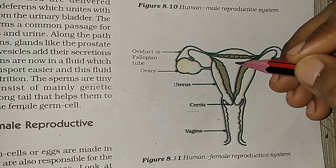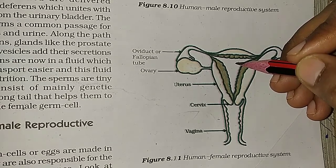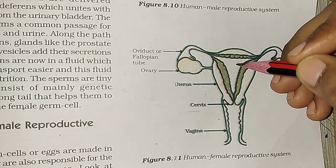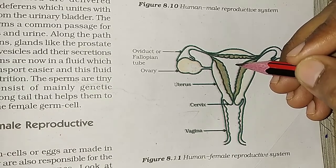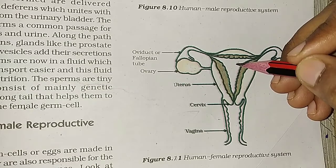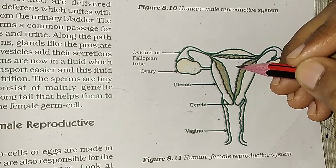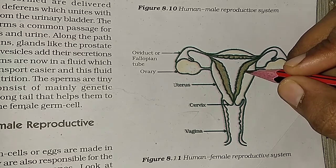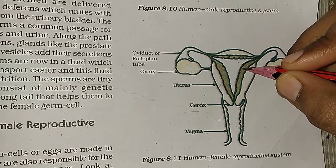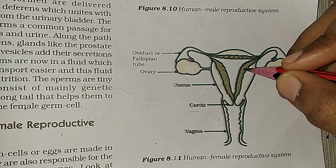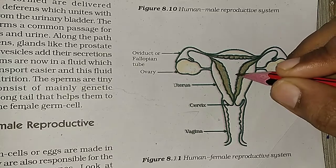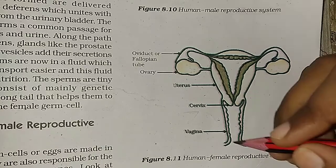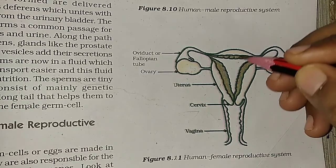The fused egg and sperm is called a zygote. This fertilized egg, the zygote, then develops into an embryo, and slowly our baby is developed. The baby's nutrition is provided by a tissue known as the placenta.